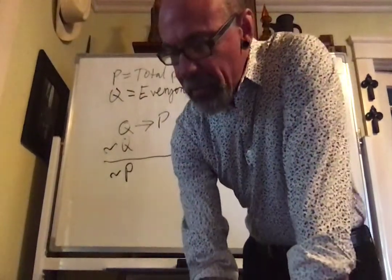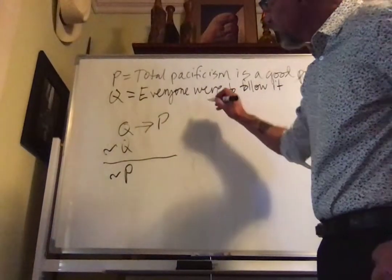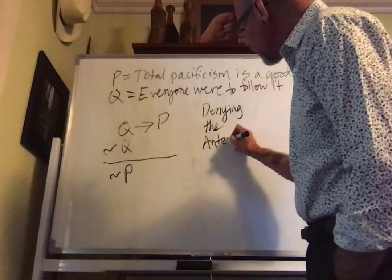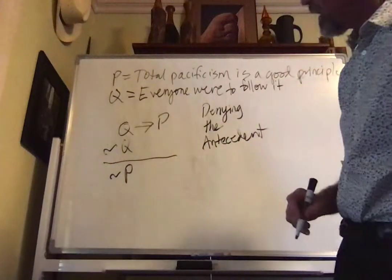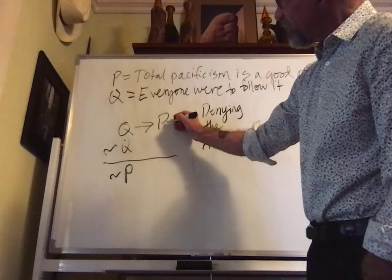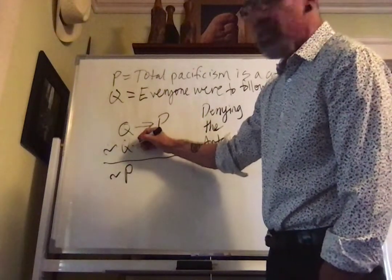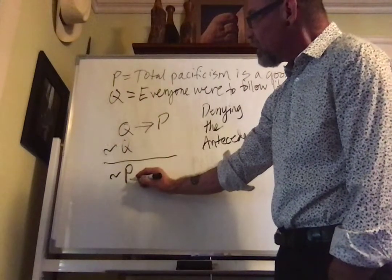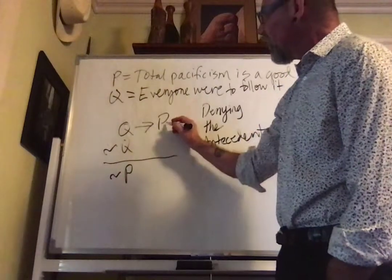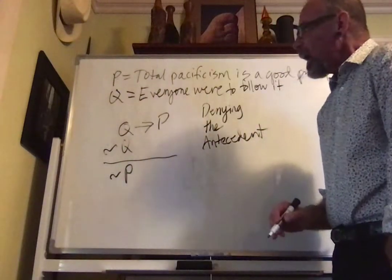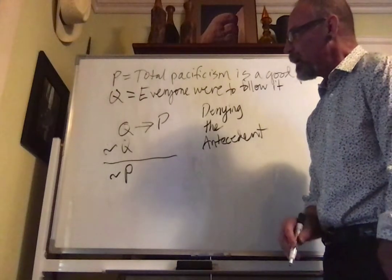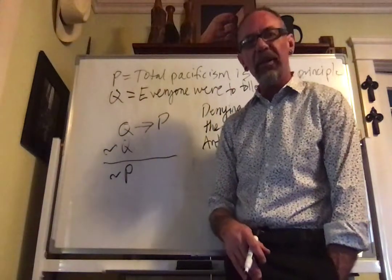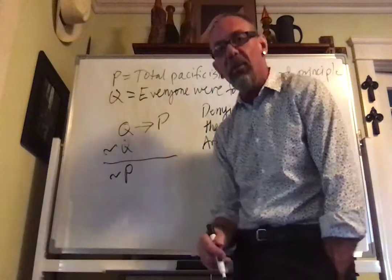Now, Professor Harmon's reasoning here is invalid. This is an instance of a common reasoning mistake — a common form of fallacy known as denying the antecedent. One of the premises is a conditional, the other premise is the denial or negation of the conditional's antecedent, and the conclusion is the denial or negation of the consequent of the conditional premise. Professor Harmon has obviously made a mistake in reasoning here. I don't think his mistake is that he thinks denying the antecedent is a valid argument form — that's unlikely.